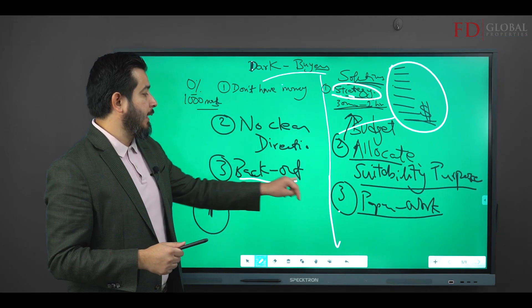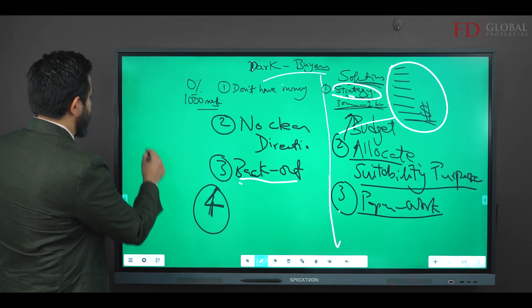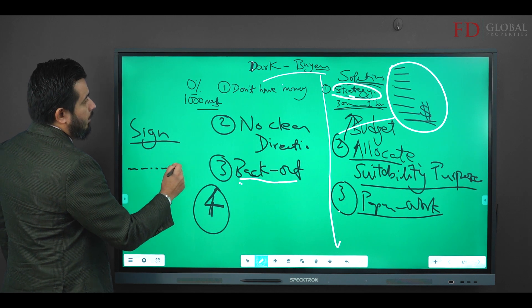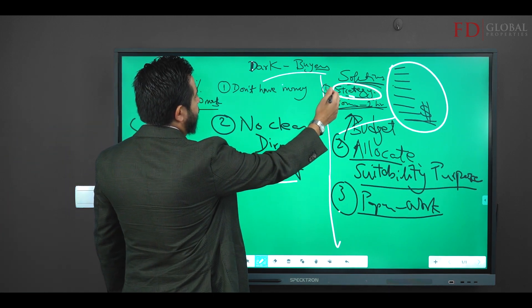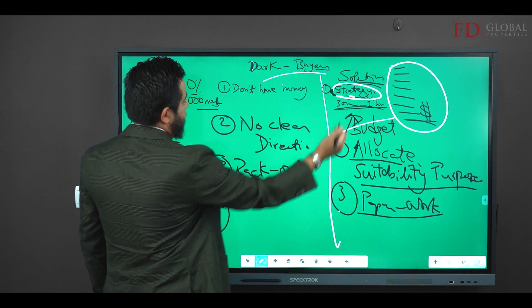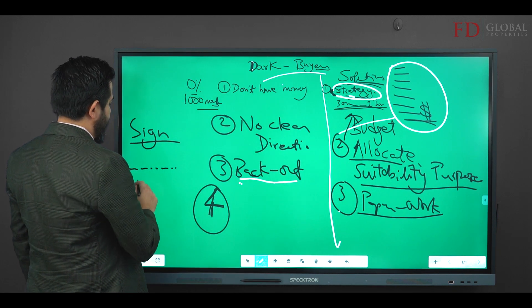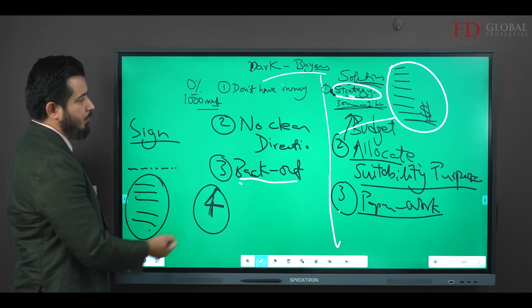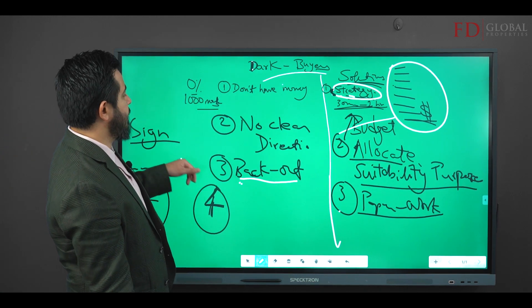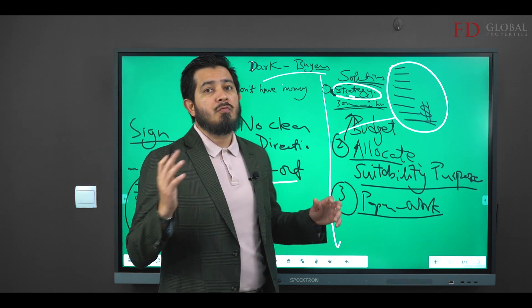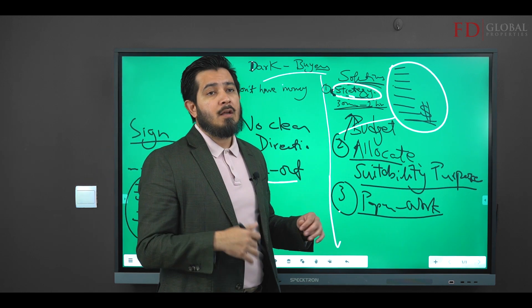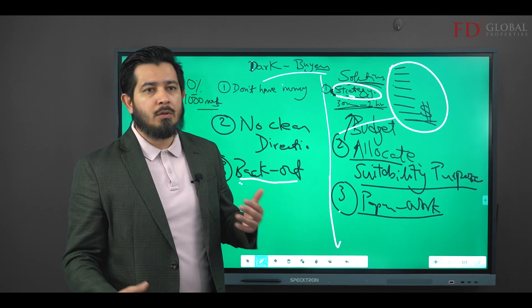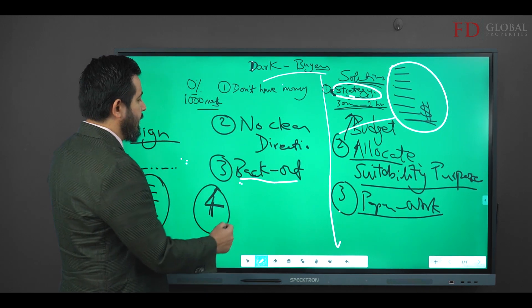One of the ways to avoid a buyer backing out is before you actually get them to sign the dotted line, go back to the strategy. Tell the buyer we identified one, two, three, four, five as main things that you needed from the property that you buy. Does this property satisfy those four things that you need? If the buyer says yes, you're okay. The buyer says no, don't go forward.